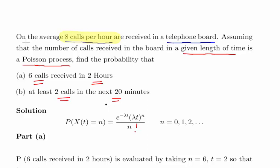So essentially what we're doing here is we're changing the time period. So our default setting is per hour, but we're going to work on the basis of two hours in the first question and then 20 minutes in the second question.